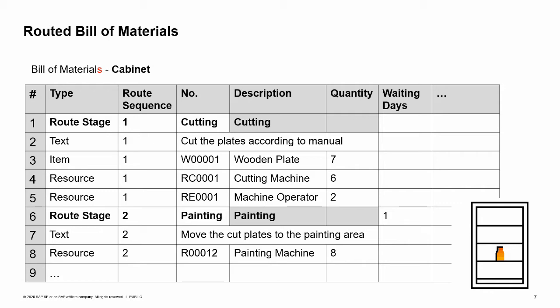Refer to the production process training to learn more about routing date calculation. Each stage has a root stage header and a root sequence number. The first row of the stage is the header, which contains a description for the stage. A row is set as the header once the root stage type is chosen. All rows that follow the header relate to the same stage and have the same root sequence number. The image illustrates a routed bill of materials of a cabinet item and shows two stages.